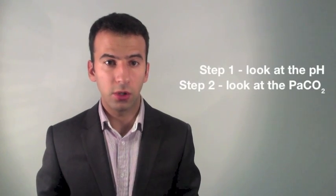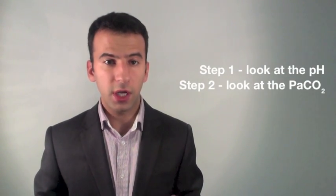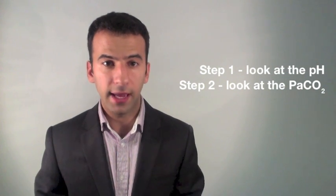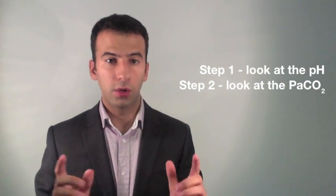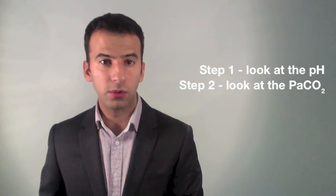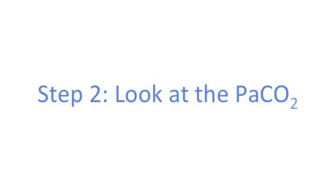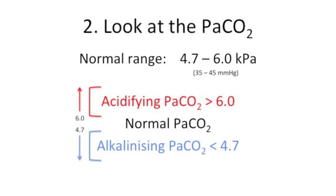After looking at the pH, the next thing to look at is CO2 — you do CO2 next because if you don't, you may get confused. So it goes pH and then CO2. Step 2: look at the PaCO2. The more CO2 you have, the more hydrogen ions are being produced as it is dissolved, and so the more acidic the blood becomes. You just need to know that CO2 is acidifying.